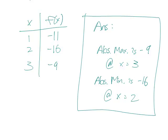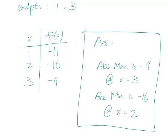So that's our answer. And notice that x equals 1 is neither the absolute max or absolute min. It's still a relative max. It goes from minus 11 to minus 16, but it's not the absolute max or the absolute min. And in this problem, we won't worry about that.